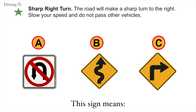Sharp right turn. The road will make a sharp turn to the right. Slow your speed and do not pass other vehicles. The correct answer is C. Sharp right turn.